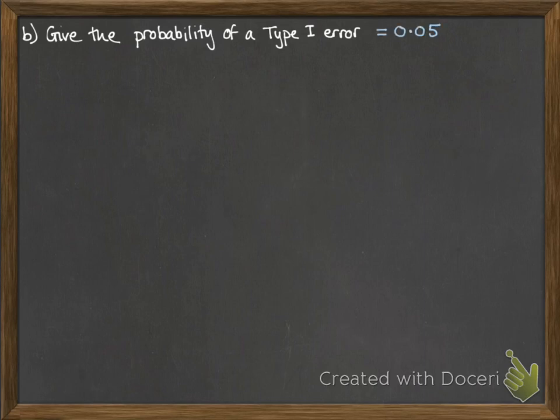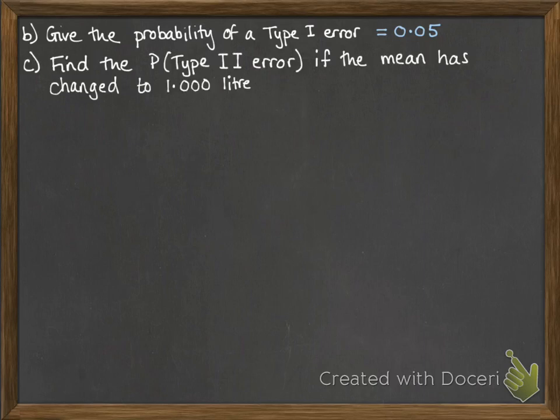Now we're going to need to go on to a new slide for the next bit. We're going to give the probability of a Type 1 error. Now this is just the significance level of our test. So this is 5% or 0.05. And then find the probability of a Type 2 error if the mean has changed to 1.003. So you'll notice we need to be given what the new mean is to be able to work out the probability of a Type 2 error.